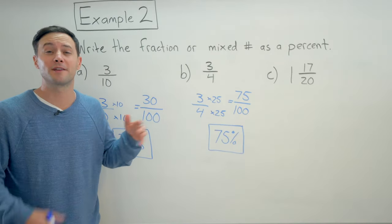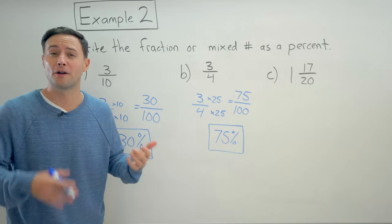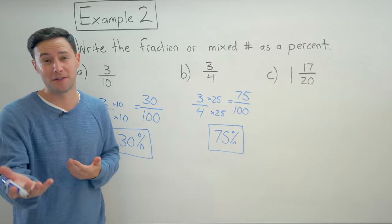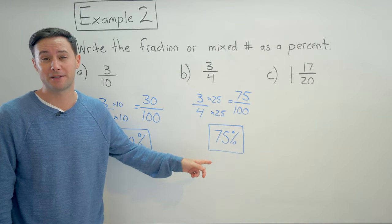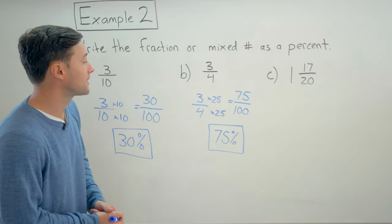And to be honest, the fourths are ones you want to have memorized because they come up all the time. One fourth is twenty five percent. Two fourths is a half, which is fifty percent. Three fourths, seventy five percent. Four fourths, that's just one, which is a hundred percent.